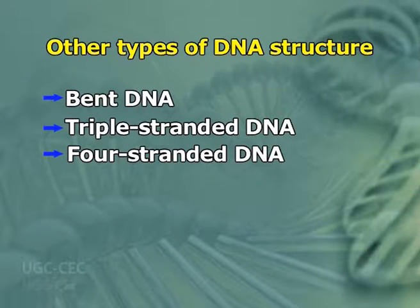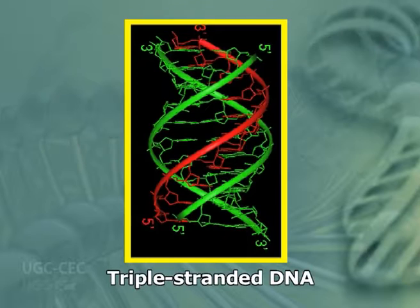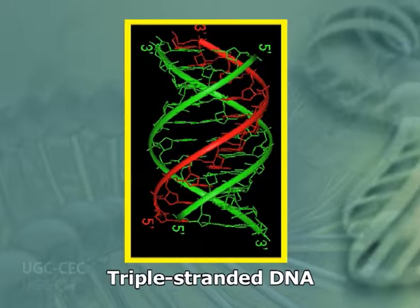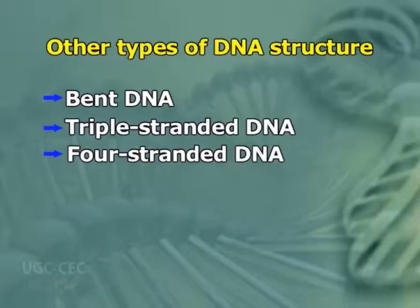The second example of other DNA structures is triple-stranded DNA. Triple-stranded DNA formation is less stable than the double helix. A thymine can form two Hoogsteen hydrogen bonds to the adenine of an A-T pair, forming a T-A-T triplex. A protonated cytosine can also form two hydrogen bonds with guanine of a G-C pair, resulting in a protonated C-G-C triplex.